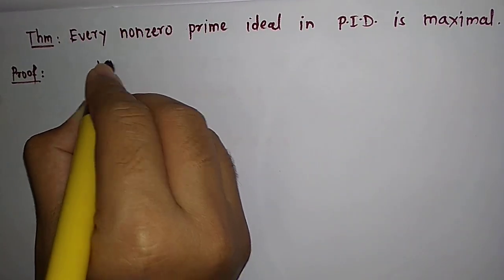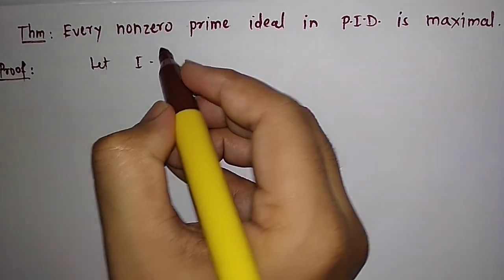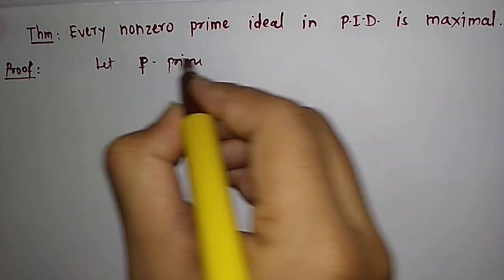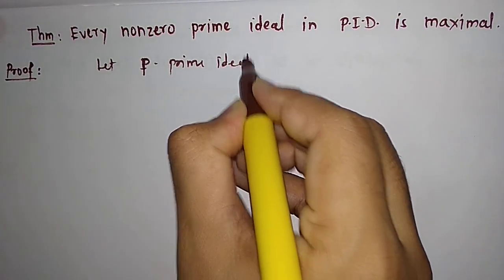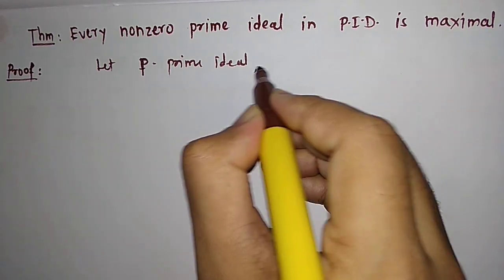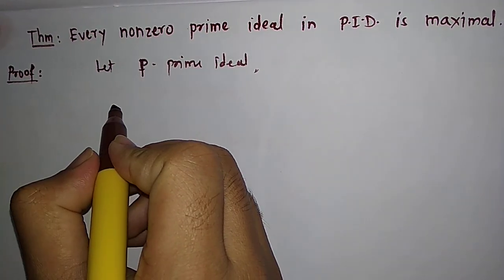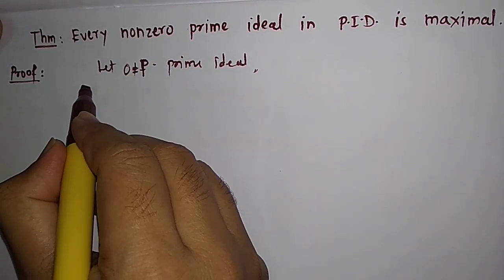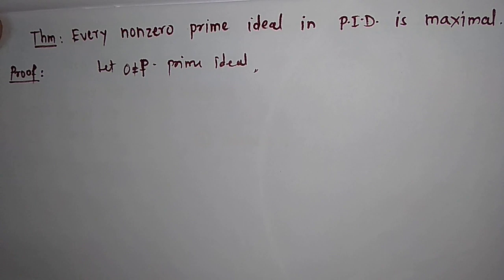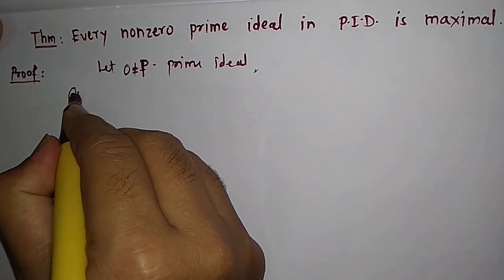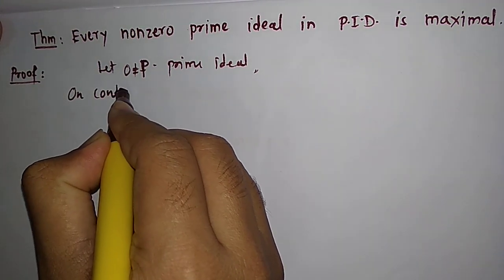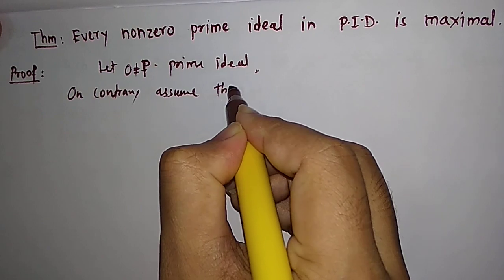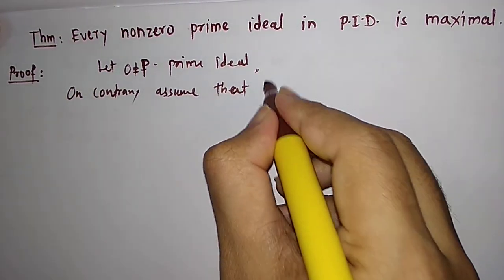So let P be a prime ideal — and this is a non-zero prime ideal. Our claim is that this is actually a maximal ideal. So on the contrary, assume that P is not maximal.